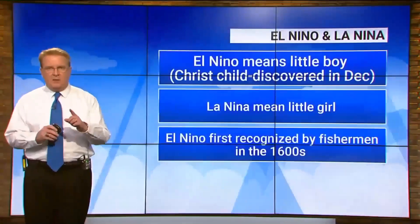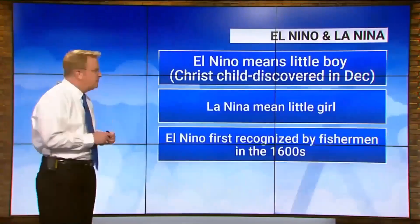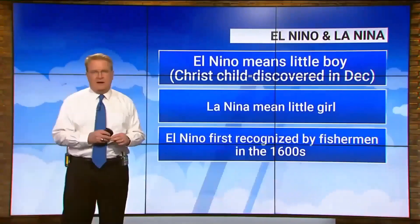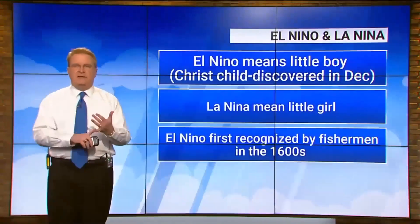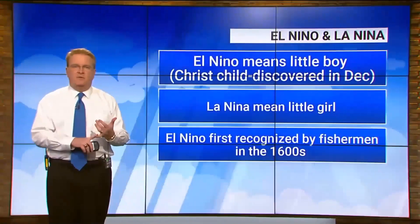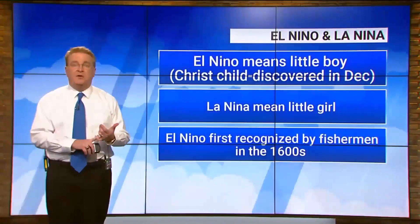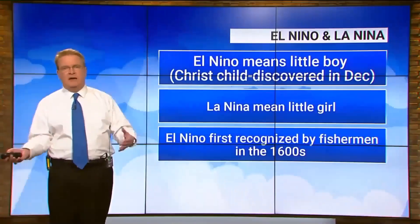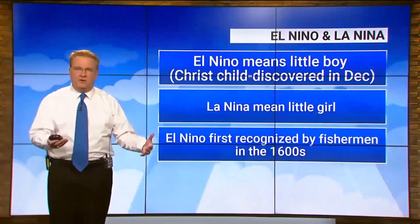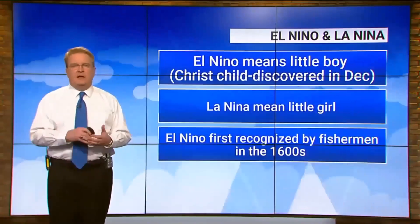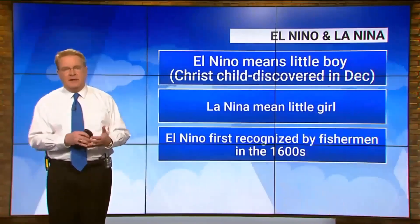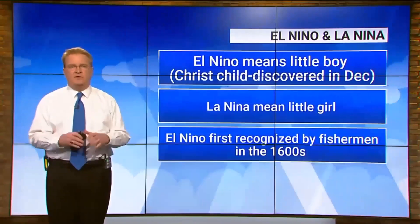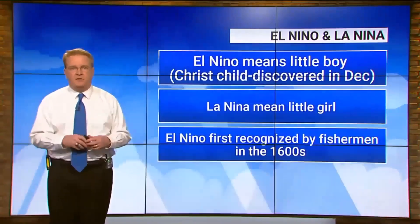I've got a couple of boards and we're going to gradually show it to you. First of all, the name El Niño means 'little boy' in Spanish. It was named because the first El Niños were discovered in December, and in December we have Christmas, so it was named El Niño for the Christ child. La Niña is the opposite — it stands for 'little girl.' It's a different weather pattern but they're in the same area and they have real impacts on our weather patterns.